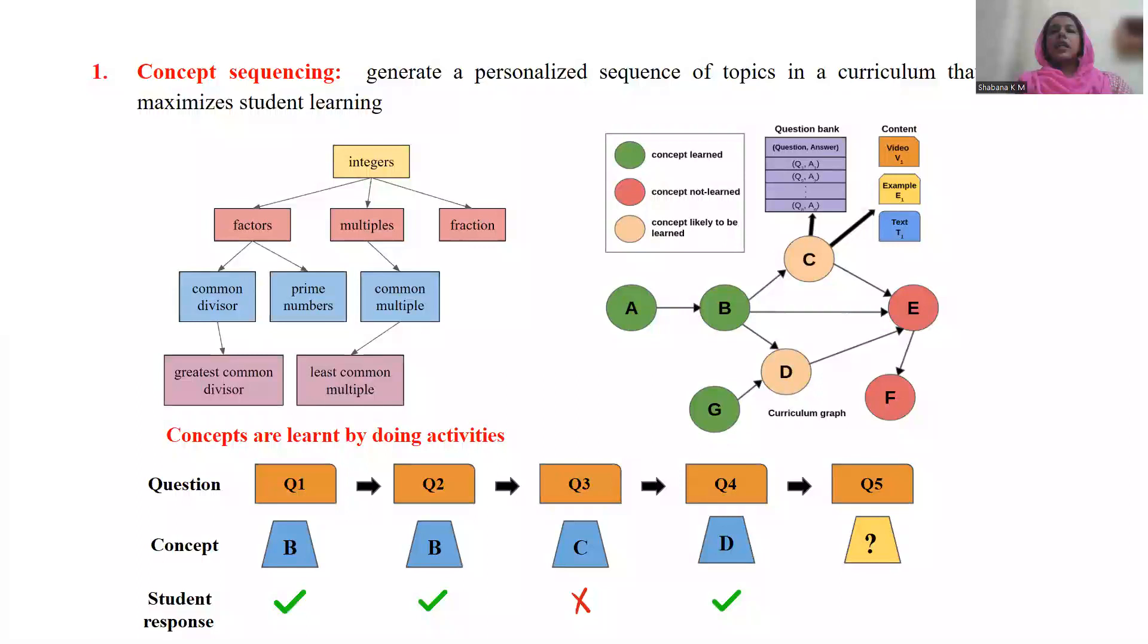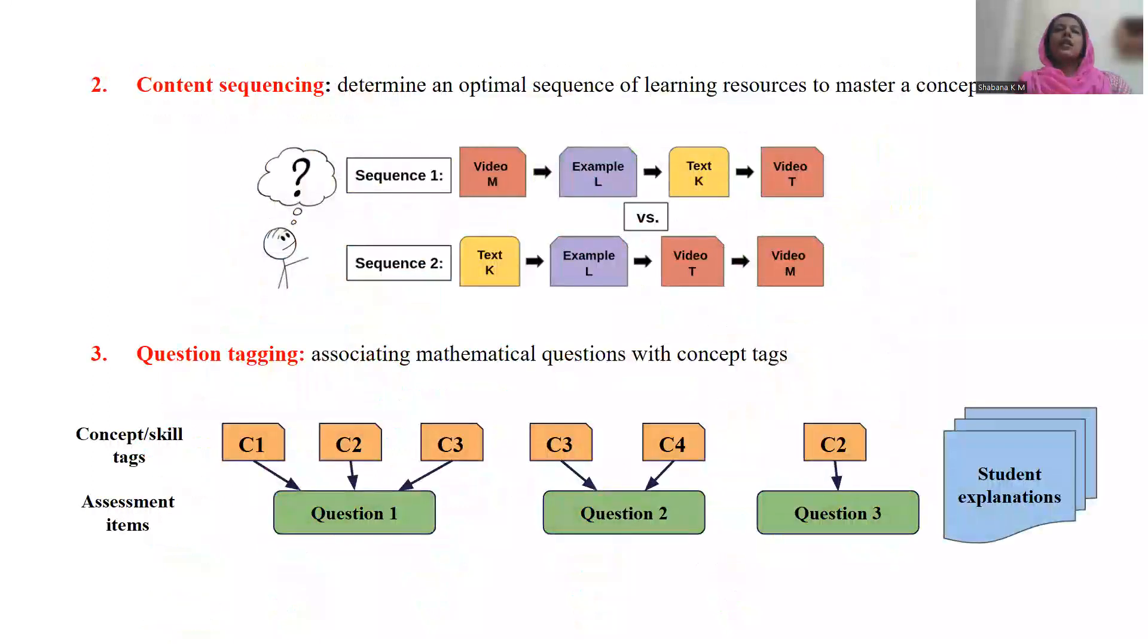We have proposed a technique that combines a reinforcement learning algorithm with a statistical change point detection technique that has outperformed prior state of the art for concept sequencing. The second problem that we have studied is that of content sequencing.